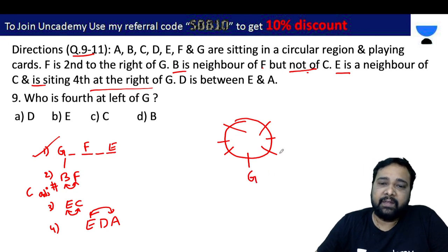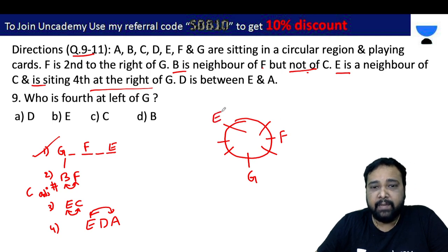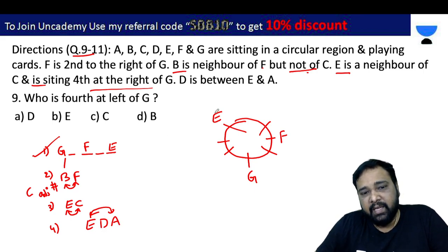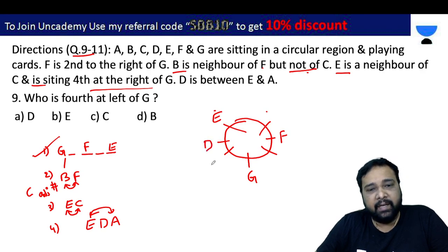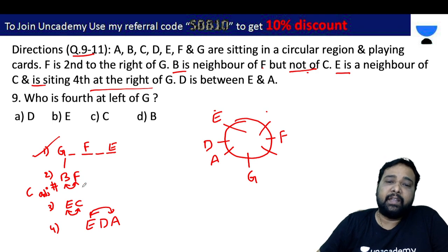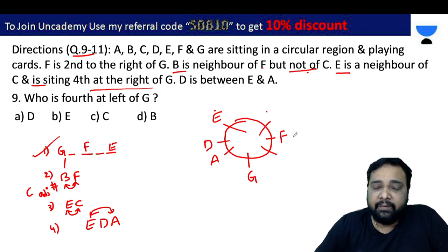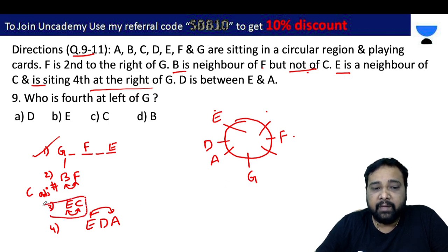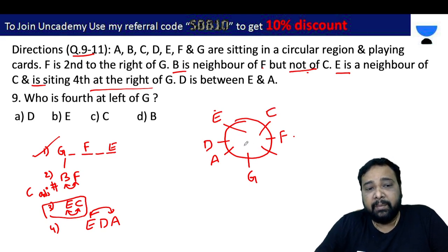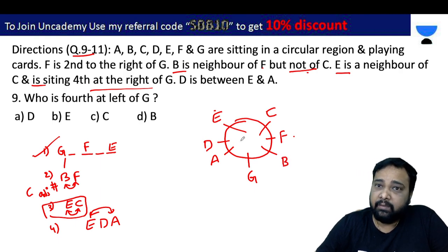G's first right is F, second right is F confirmed. D is between E and A. E is the person next to D, and D is between E and A. Working through B: B is neighbor of F. E's neighbor from the third clue is C. This confirms our circular arrangement.